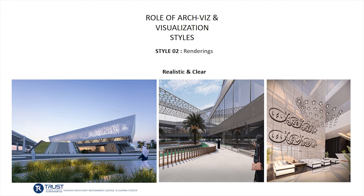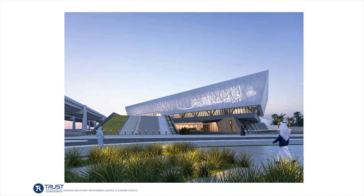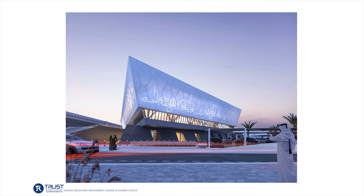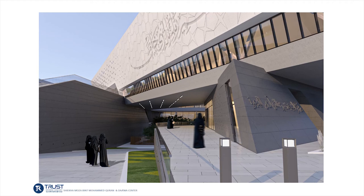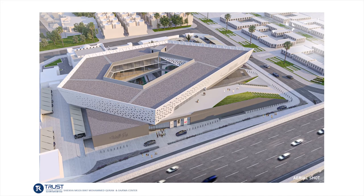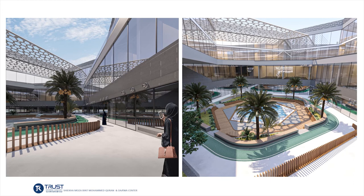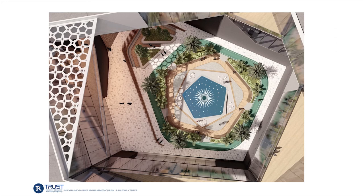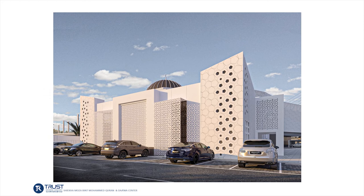The second deliverable was the renderings themselves, which needed to be more realistic and clear to give a clear image of our design. This shot shows our main human-eye perspective. This one shows our main entrance and access to the basement. Here is an aerial or bird's-eye shot. These shots show the internal courtyard design, and here is the top view for the internal courtyard as well. These shots show the mosque renovation works.